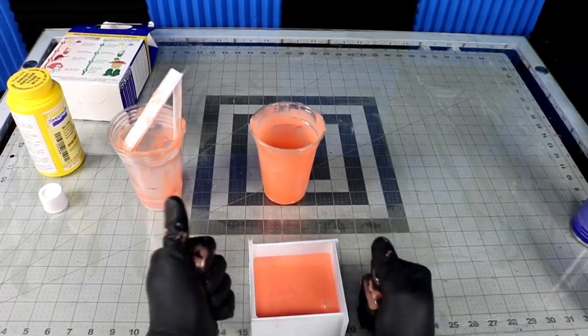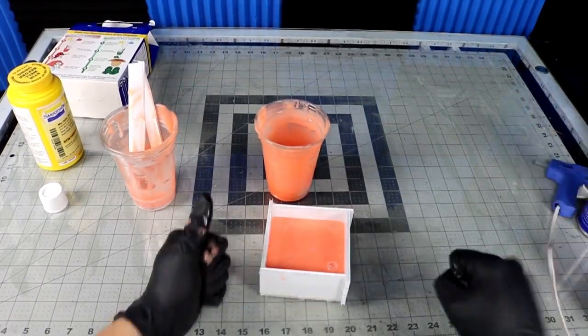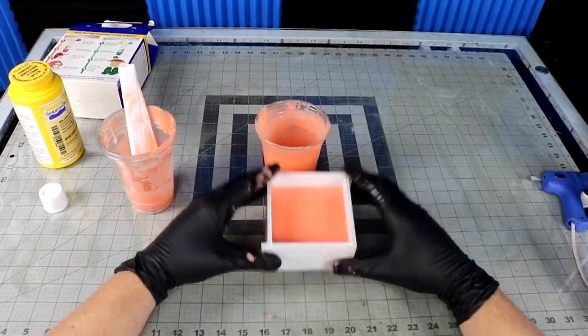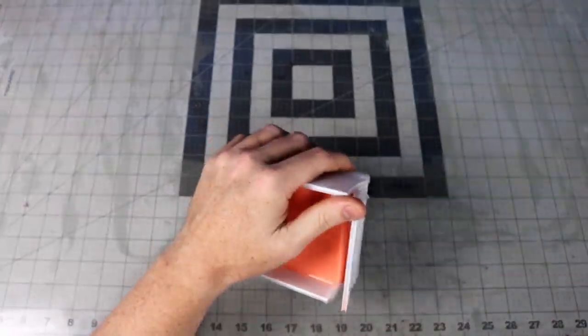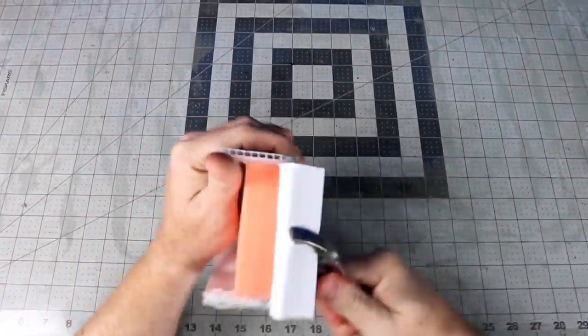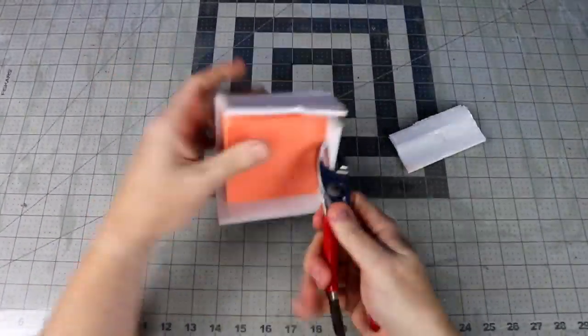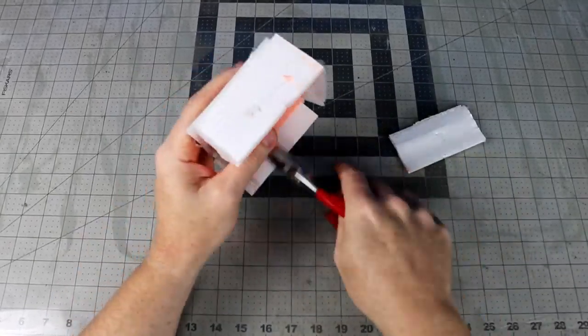Tap the table and the box itself to get rid of any air bubbles that may have occurred while pouring. After about four hours it's ready to demold. Pry off the box and remove the clay from the mold.